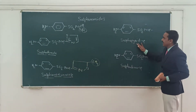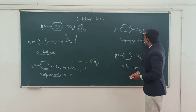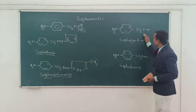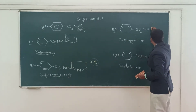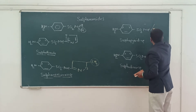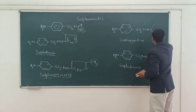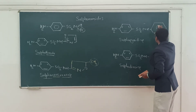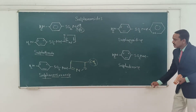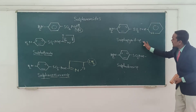Coming to the next structure: sulfapyridine. Here we have the sulfonamide part and then pyridine. We have to substitute here. Pyridine is a six-membered ring — the pyridine ring. This is what the sulfapyridine structure looks like.